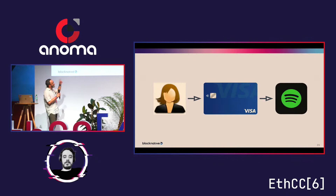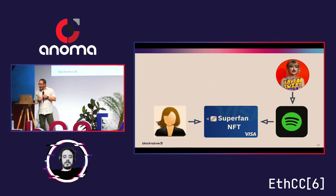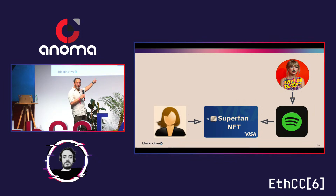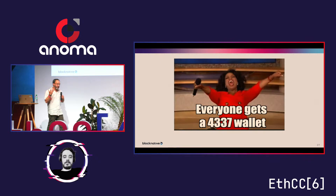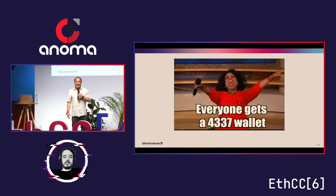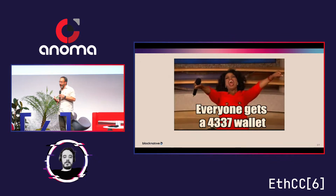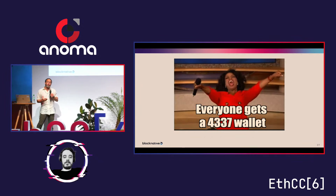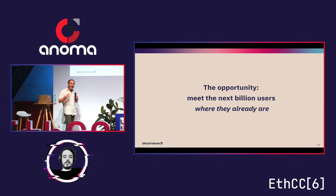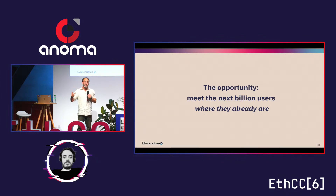Enter 4337: hypothetically, Alice's Visa card could be her non-custodial wallet — she doesn't need to do anything special. Alice uses her Visa card to pay for her Spotify subscription, so Sailor Twift does a promotion with Spotify to identify top fans, issues an NFT, and it goes onto the Visa card used to pay for Spotify. When Alice shows up for the show, she presents her Visa credentials via her phone wallet, demonstrates access, proves she has the NFT, and can even sell or transfer it. This is the unlock: everyone can have a 4337 wallet — the key to onboarding the next billion users.